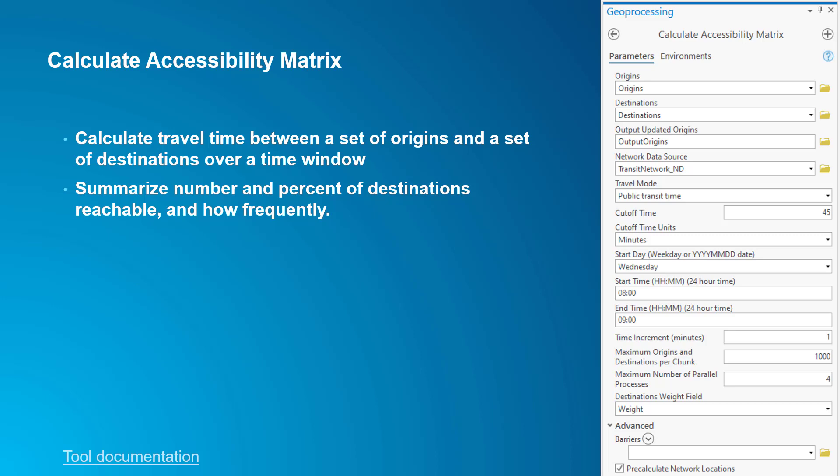OD cost matrix requires points as input, but this tool will accept polygons as origins and destinations, which is particularly useful if you're using census blocks. The tool will calculate the centroids of the input polygons and use those in the OD cost matrix, then take care of joining the results back to the polygons for you. Keep in mind that the centroid of a polygon is only a good representation if the polygon is small with respect to walking distance. It's not appropriate, for example, to use census tracts since tracts are typically very large on a pedestrian scale.